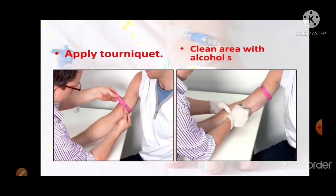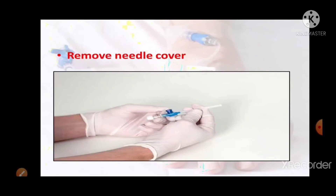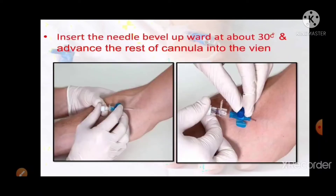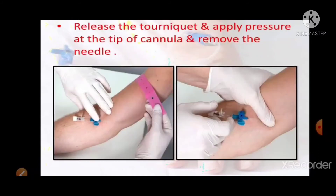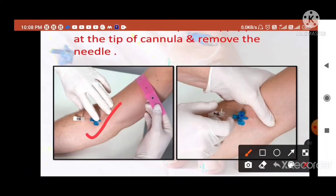To apply the tourniquet: first apply the tourniquet and clean the area with alcohol. Remove the needle cover and insert the needle bevel upward at above 30 degrees, then advance the cannula into the vein. Release the tourniquet and apply pressure at the tip of the cannula, then remove the needle.